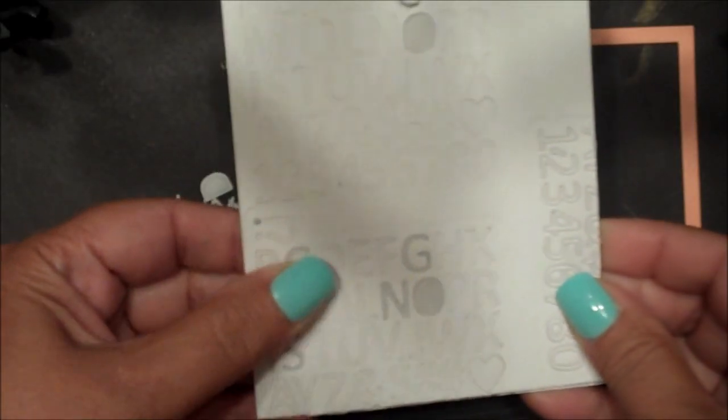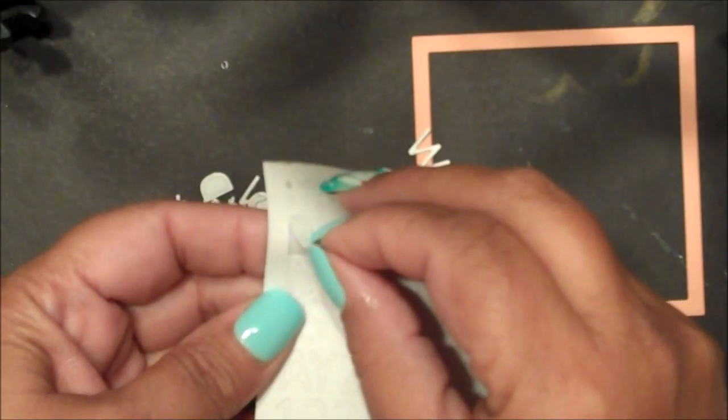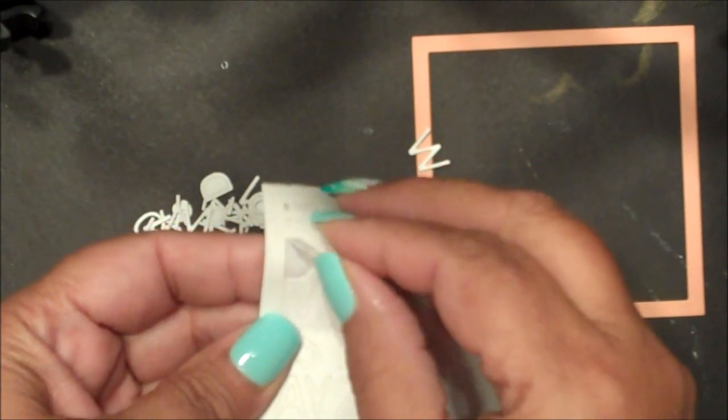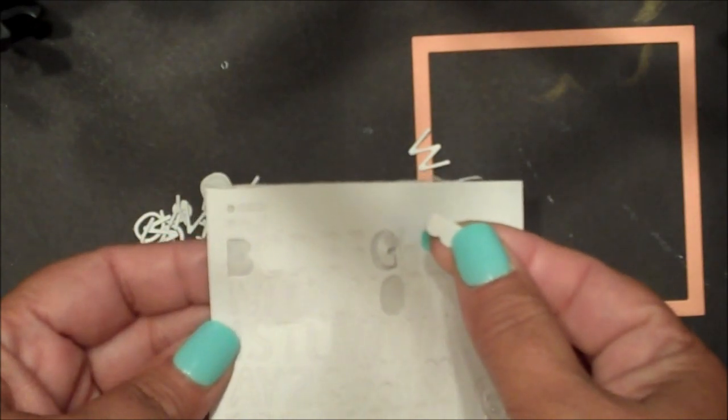You can adhere the letters to your letter board a number of different ways. You can die cut the letters from adhesive backed cardstock, peel the letters, and adhere them to your letter board.